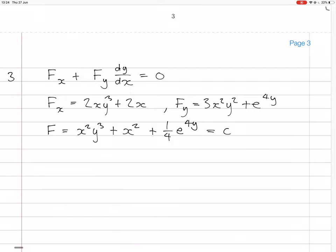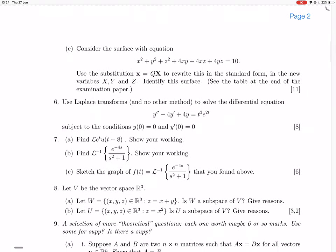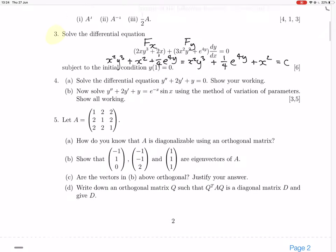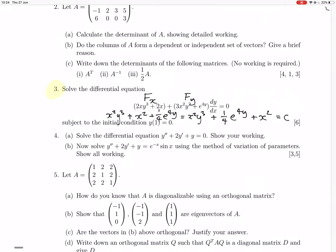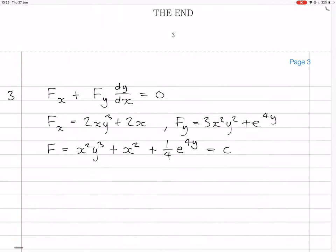Ah, but then we need to use the initial condition. So the initial condition was... where is it now? Where's it gone? The initial condition was y(1) = 0. So in this equation we have, we need to use the fact that when x equals 1, y equals 0.